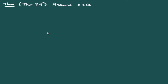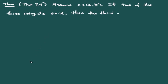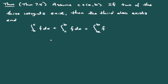Theorem 7.4: suppose C is some point in the open interval between A and B. If two of the three integrals exist, then the third also exists. Specifically, the integral from A to C of f dα plus the integral from C to B of f dα equals the integral from A to B of f dα.